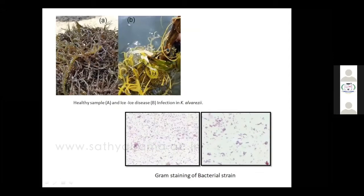On the left side you can see the healthy sample of the seaweed, Kappaphycus. On the right side, you can see some white color formation in the thallus, which looks like ice. The name 'ice-ice' comes from the Malay/Malaysian people who gave it this name, because it looks like ice crystals or a crystal form. So the left side is healthy and the right side is the diseased one.